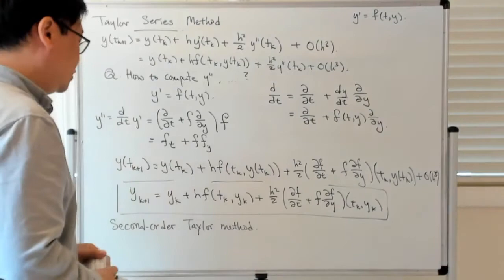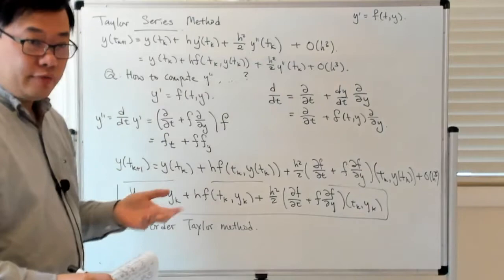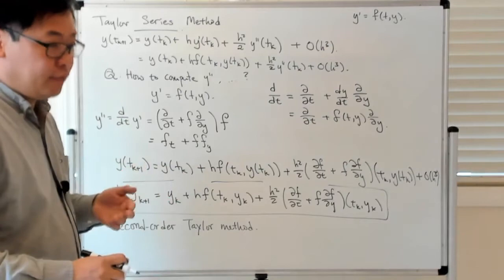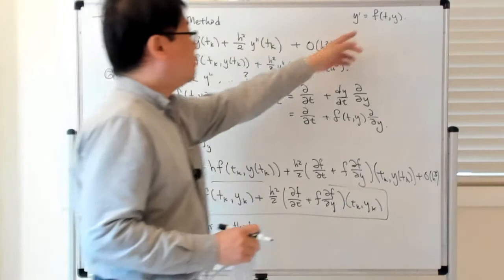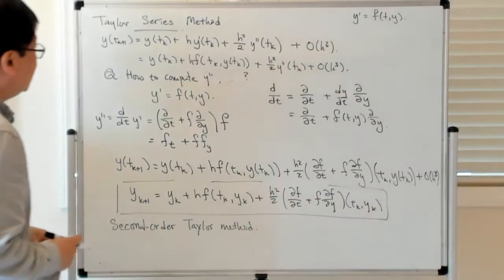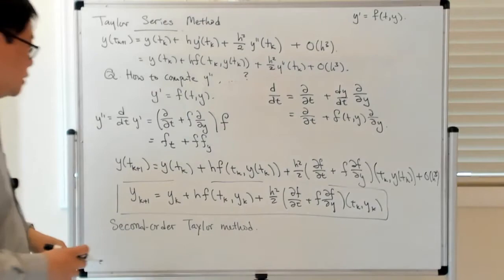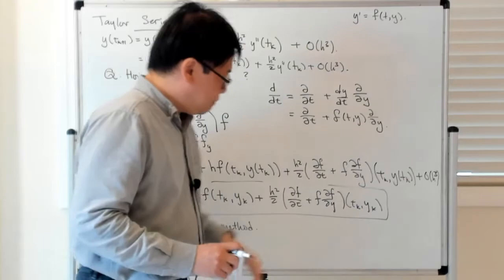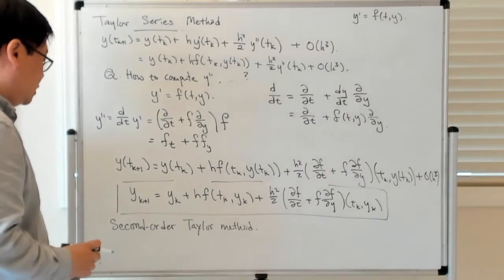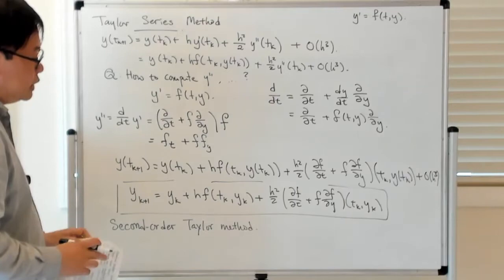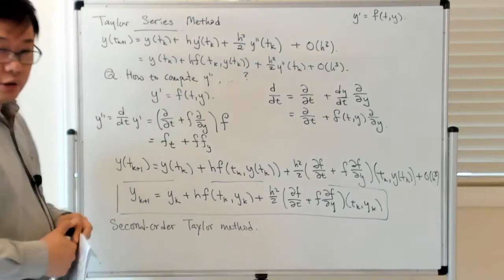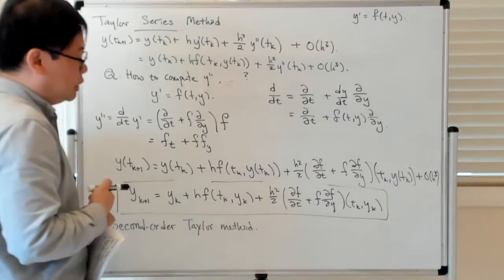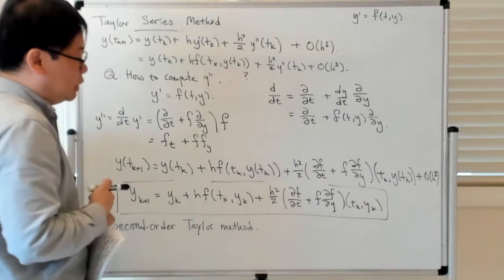There are some immediate observations. Unlike the Euler method — where the only things needed were the right-hand side of the differential equation and the initial data — with the Taylor series method you have to do some additional legwork to implement this. In particular, you have to compute these partial derivatives of f with respect to time and position in order to compute this second order term in the method. The disadvantage of Taylor series methods beyond first order is exactly this legwork necessary to pre-process the vector field.